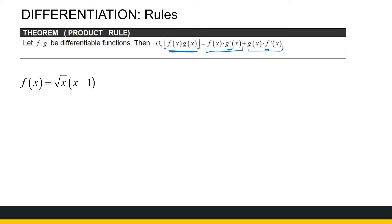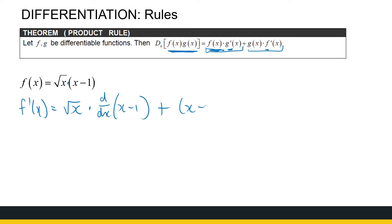Here's my function — it's root x times (x minus 1). The product rule tells me to take the first function and multiply it with the derivative of the second function, plus the second function multiplied with the derivative of the first. So root x stays there; the derivative of (x minus 1) is just 1, plus (x minus 1) times the derivative of the square root of x.